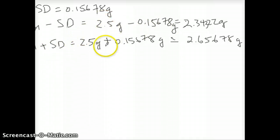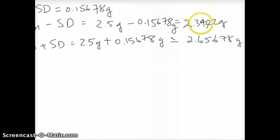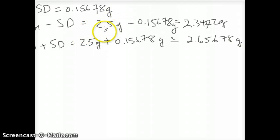I want you to think about this. You can pause the video and think about what the issue is when you write numbers like 2.34322 and 2.65678 versus what you had earlier with the mean. Pause, think about it, and then continue — I'll give you the answer.